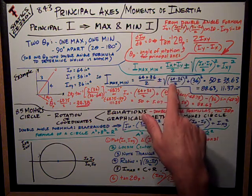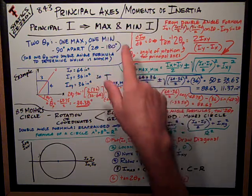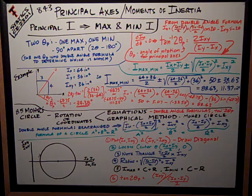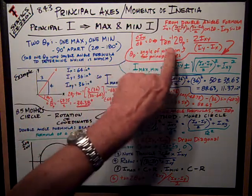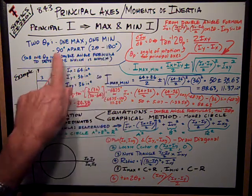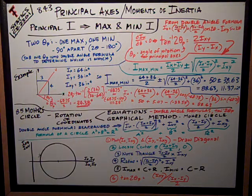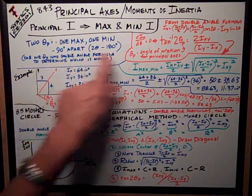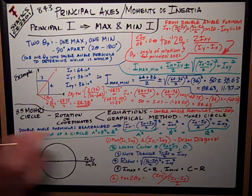2 theta_p, where theta_p is the angle of rotation to get the principal axes, the maximum and minimum, is this formula here, 2 I_xy, product of inertia, over I_y minus I_x. So I can see that I'm going to get two solutions to this formula. And so there are two principal axes, one of them is the maximum and one is the minimum. They are 90 degrees apart. Their twice angle, twice theta formula is 180 degrees apart. And I can substitute one, once I solve for this value, I can substitute one principal angle into the double angle formulas to determine which one's which. And we'll illustrate that down here in an example.